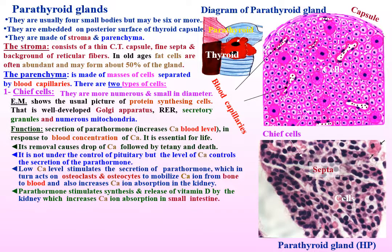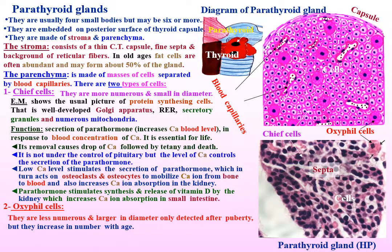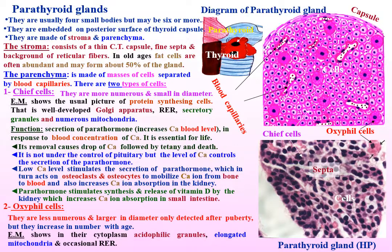Oxyphil cells are less numerous, larger in diameter, only detected after puberty, but increase in number with age. By electron microscopy, their cytoplasm shows acidophilic granules, elongated mitochondria, and occasional rough endoplasmic reticulum. Oxyphil cells are of unknown function.